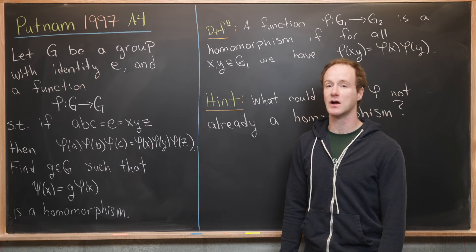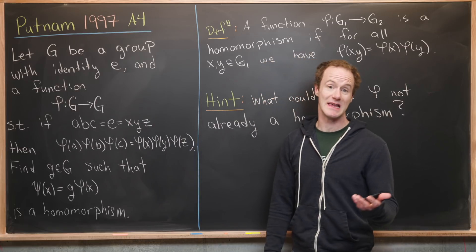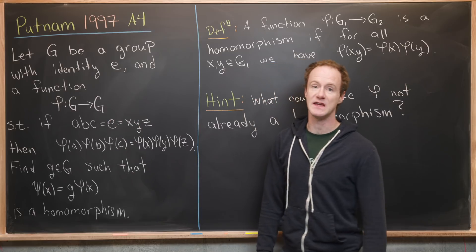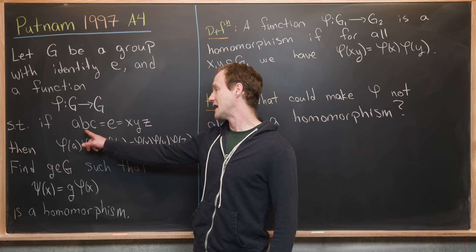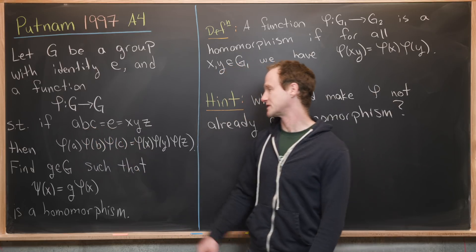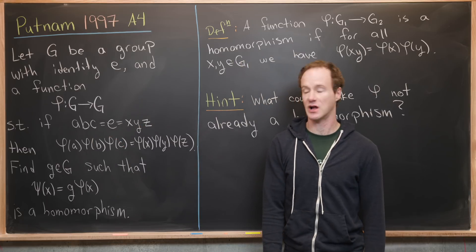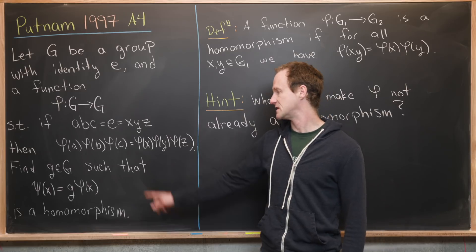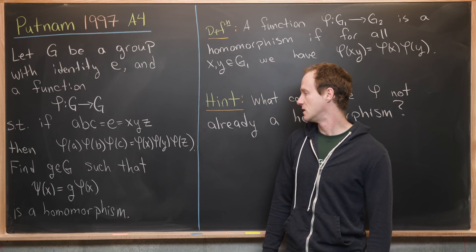We want to let G be a group with identity labeled E, which is standard notation. We have a function phi from G to G such that if A·B·C = E = X·Y·Z, where we've done the group operation on either side, then phi(A)·phi(B)·phi(C) = phi(X)·phi(Y)·phi(Z).